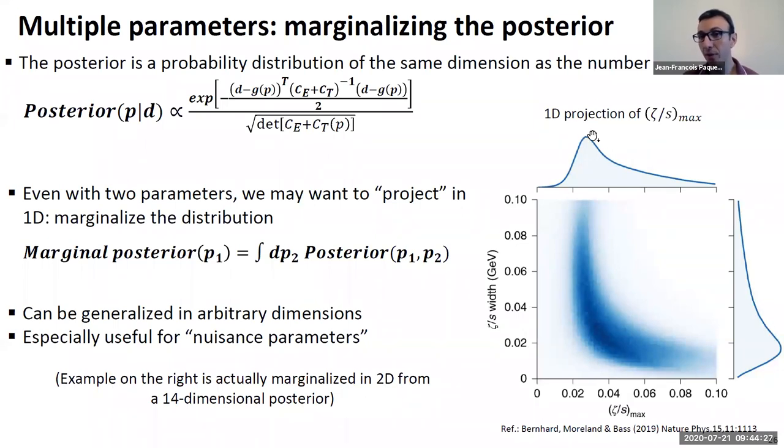You can see that you have useful information in both cases, so it's useful to project it. But you lose information. If I give you only these two 1D distributions, it's not obvious that you have this anti-correlation between the parameters. You have to be creative when you want to visualize your posterior in many dimensions. There are different ways of visualizing it. Depending on how you do it, you may lose information if you integrate out. But if you don't integrate out, it could be that you simply just cannot read your posterior.